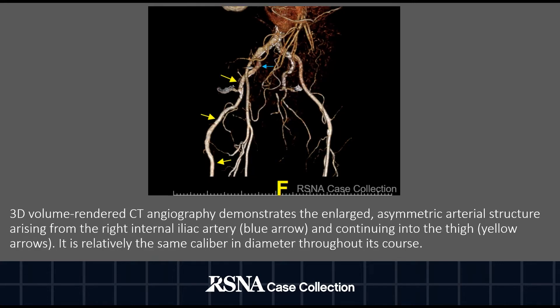3D volume rendered CT angiography demonstrates the enlarged asymmetric arterial structure arising from the right internal iliac artery, as demonstrated by the blue arrow. It continues into the thigh as demonstrated by the yellow arrows, and is relatively the same caliber and diameter throughout its course.